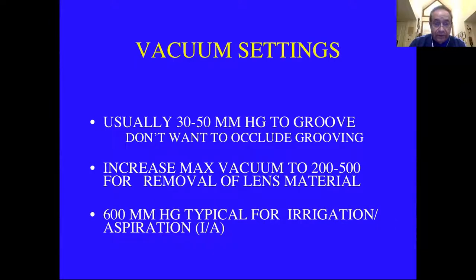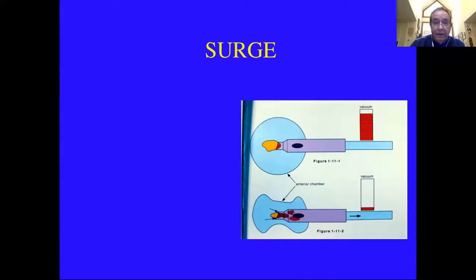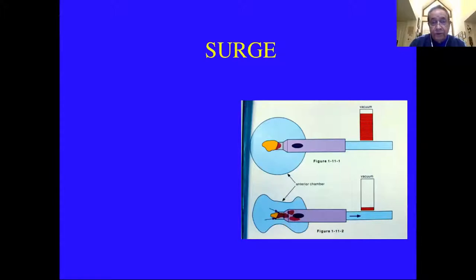Typically for irrigation aspiration, you have a smaller opening and go at 600 mmHg. You have to be aware of surge — if you're down to the last pieces, you're occluded and have max vacuum. Be very careful because the piece can suddenly get pulled in, vacuum drops from very high to nothing, and you can get collapse of the chamber and tear a capsule. So for the last bit, you want to be very slow and careful, using a little bit of FACO power at a time.